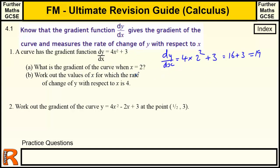Work out the values of x for which the rate of change of y with respect to x is 4. The rate of change of y with respect to x is just this differential function dy by dx. We want to find out for what value of x that equals 4 — so where does dy by dx equal 4?